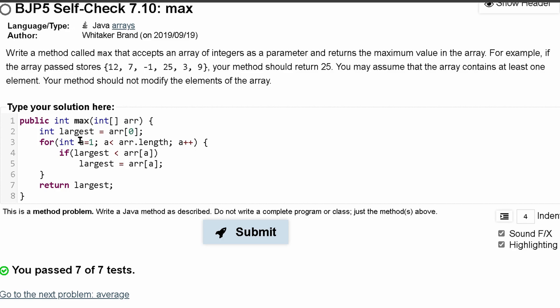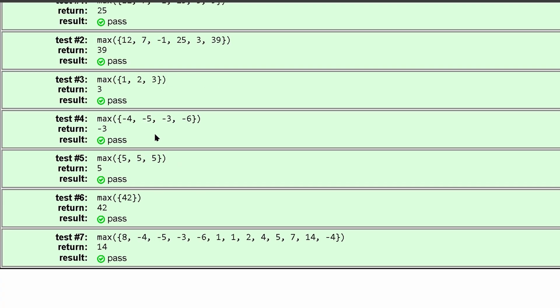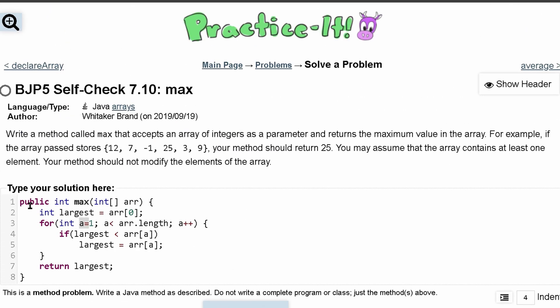Okay, so my issue was since we started at 1, we don't need to subtract 1. This already takes care of that. So we've passed 7 out of 7 tests. Everything looks good. And that's what I would use to solve self-check 7.10, which is max.